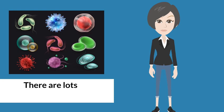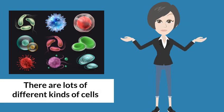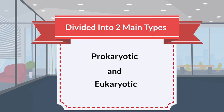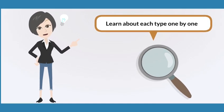Although there are lots of different kinds of cells, they are often divided into two main types: prokaryotic and eukaryotic. Let's learn about each type one by one.